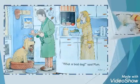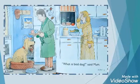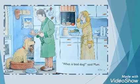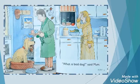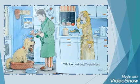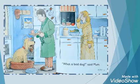Now look at this page. 'What a bad dog,' said mum. Here Floppy did another wrong thing and he forced mum to call him a bad dog. Look how he put dad's shoe in his mouth and started eating.